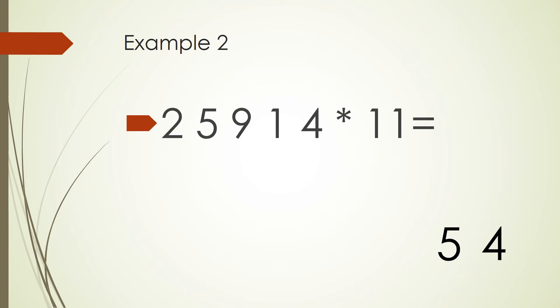Then we need to add 9 plus 1 which is 10. We write 0 and we carry 1. Next is add 5 plus 9 which is 14 plus the 1 that we carry, which is 15. We write the number 5 and carry the number 1.